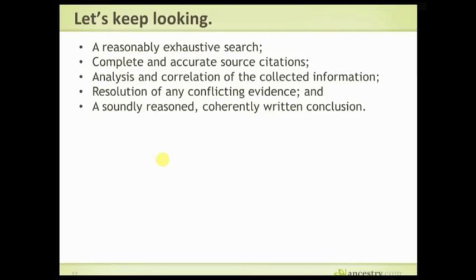So let's go back. What do we do when we want to prove something? We do a reasonably exhaustive search — we've been searching; the only thing we haven't found is the birth certificate. We've looked at complete and accurate source citations, analyzed our documents, thought about where they came from. We've done analysis and correlation of the collected information, and the resolution of conflicting evidence — and right now we still have quite a bit of conflicting evidence. I don't think we've come up with an answer yet.